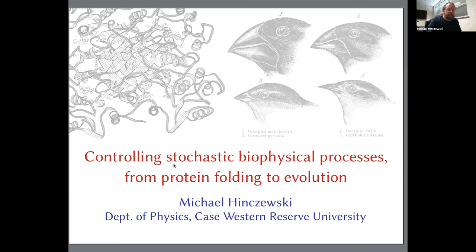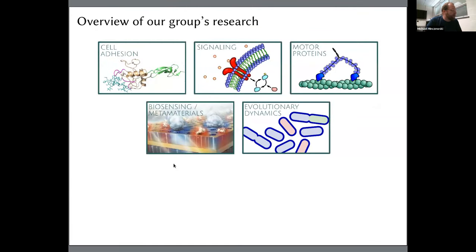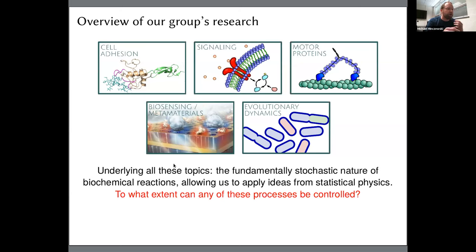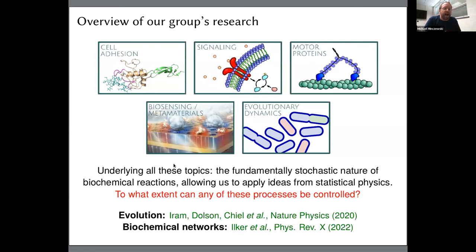What I'd like to talk about today is a line of research that we've been pursuing in our group for the last couple of years. We're interested in mathematical modeling of biological systems from the scales of individual proteins all the way through populations. In all these cases, we're interested in the stochastic nature of the dynamics and applying ideas from statistical physics — and in particular, whether we can have some measure of control of these stochastic processes. What I'll describe today is essentially two stories: one is controlling on the larger scale — entire populations of organisms — and the other is control on the level of individual proteins, so biochemical networks.